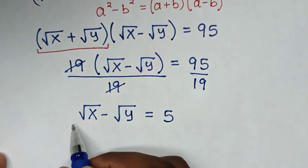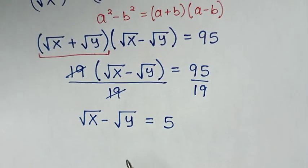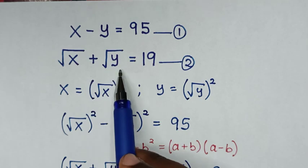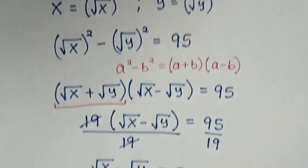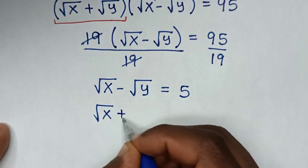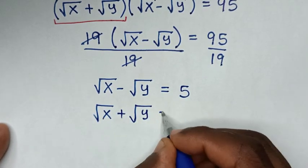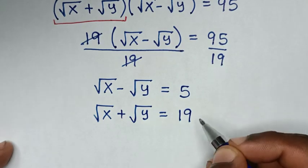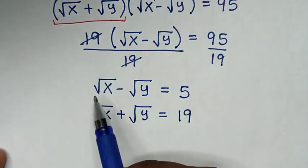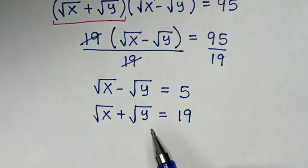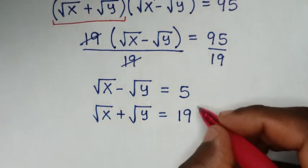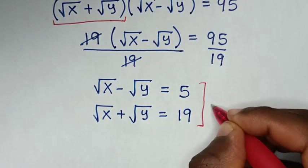We now compare this result with equation 2: square root of x plus square root of y equals 19. So we have square root of x minus square root of y equals 5, and square root of x plus square root of y equals 19. These are simultaneous equations in terms of square roots, and we will solve by elimination by adding the two equations.